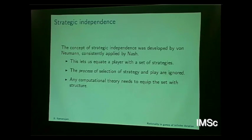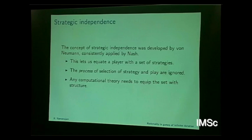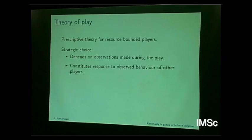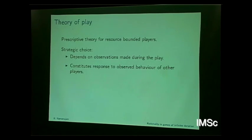The idea is we simply equate a player with a set of strategies — you don't care about anything else about a player. The process of selection of strategy and player is completely ignored. If you're thinking of any computational theory, that set needs to be equipped with some structure. On the other hand, if you're interested in a theory of play, what you want is an advice function that tells a player how to play — a prescriptive theory for resource-bounded players — where strategic choice depends on observations made during play and constitutes a response to observed behavior of other players.